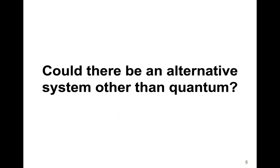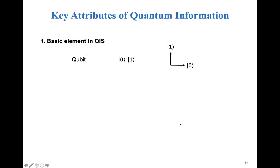So those are the main challenges right now. The main question that me and my group here are trying to ask is whether there is any alternative system that can serve the same purpose, but not quantum. So before I answer this question, I just want to show a little bit what's the essential attributes that's needed for quantum information science.